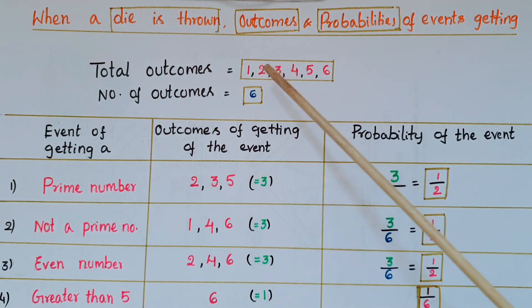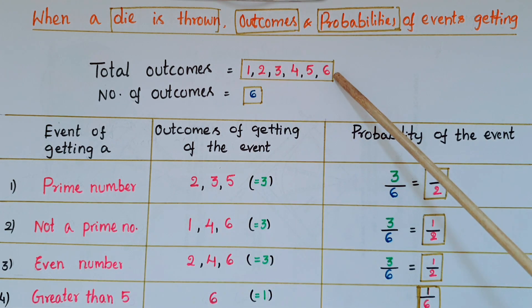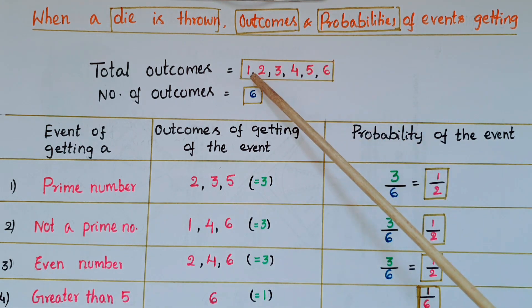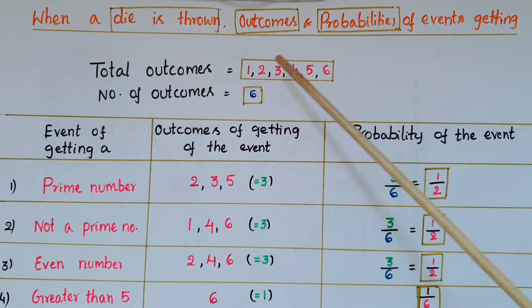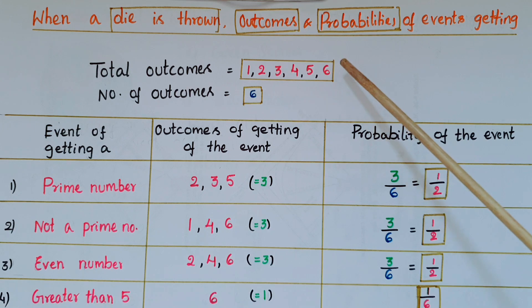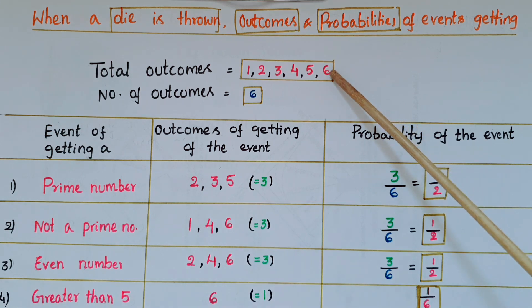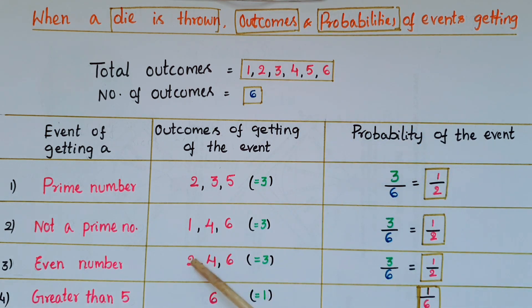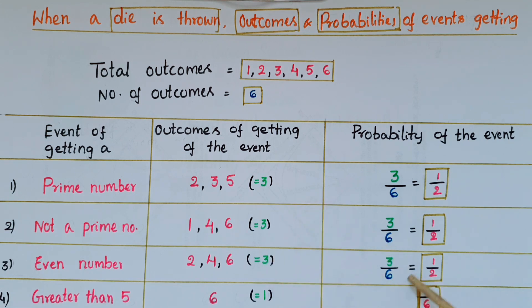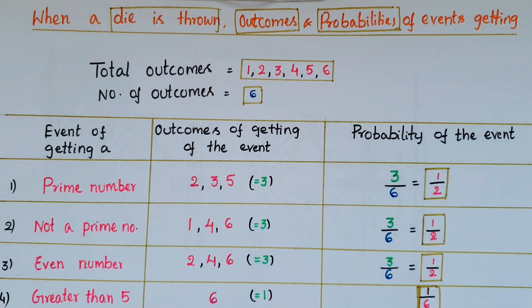Next one is even numbers. Out of these outcomes, even numbers are 2, 4, and 6. So here the outcomes are 2, 4, 6 — those are 3. So probability of the event is equal to 3 by 6, that is 1 by 2.